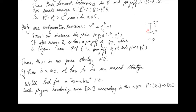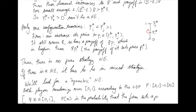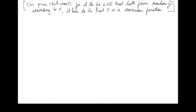We're going to use a cumulative distribution function f to represent the mixed strategies that both players will follow. As a reminder, the CDF tells us that for all x in the interval 0 to 1, f(x) is the probability that the firm sets a price pi less than or equal to x. So for every x between 0 and 1, f(x) is the probability that the price the firm sets is less than or equal to x.